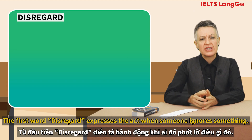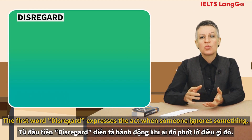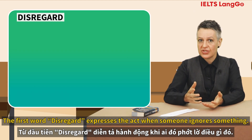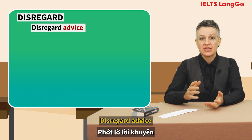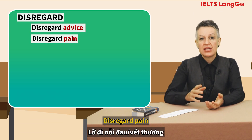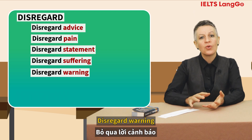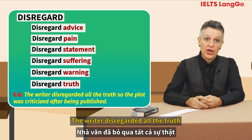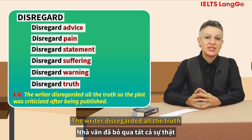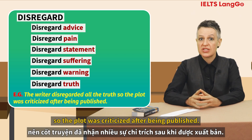The first word, 'disregard', expresses the act when someone ignores something. It goes with: advice, pain, statement, suffering, warning, truth. Example: the writer disregarded all the truth, so the plot was criticized after being published.